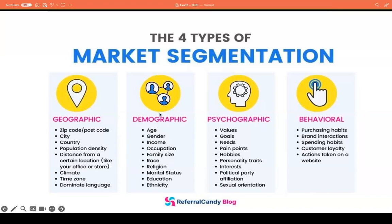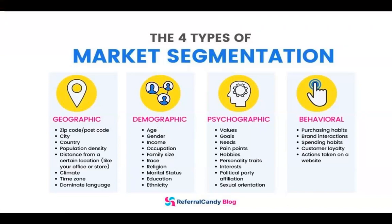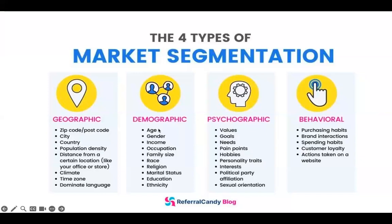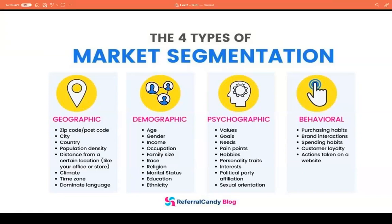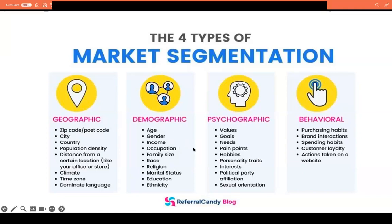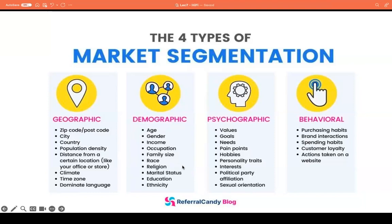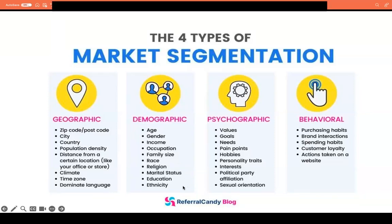For demographic market segmentation, marketing experts can use demographic variables, basing strategies on the characteristics of consumers. This gives a company a better opportunity to meet the needs and wants of specific people in the market. Demographic variables you can make use of include age, gender, income, occupation, family size, race, religion, marital status, education, ethnicity, and so on.